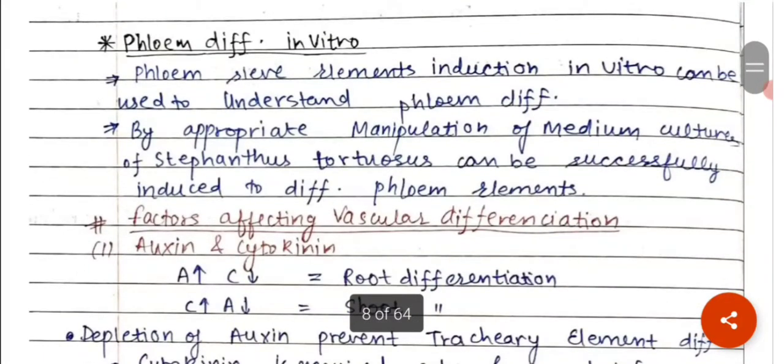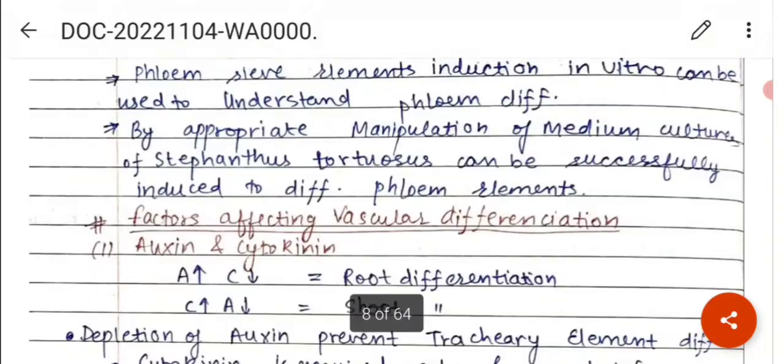Phloem differentiation in vitro. Phloem sieve elements induction in vitro can be used to understand the phloem differentiation. By appropriate manipulation of medium cultures of Streptanthus, they can be successfully induced to differentiate phloem elements.